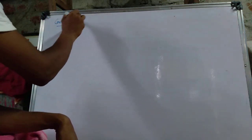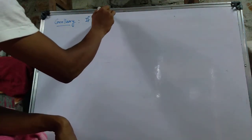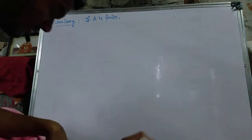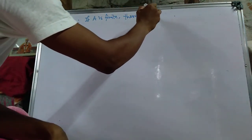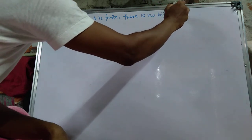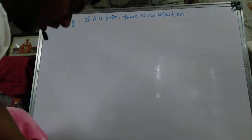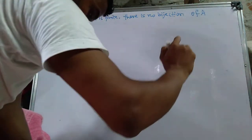Now we are at the corollary — what the corollary tells us and how we derive it from this theorem. First corollary: if A is finite, there is no bijection of A with a proper subset of itself.